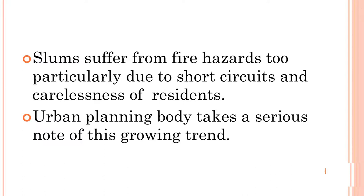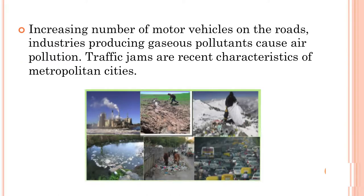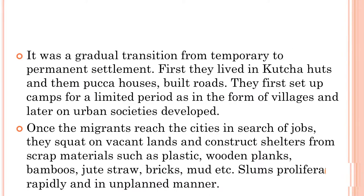Urban planning bodies take serious note of this growing trend. Increasing numbers of motor vehicles on roads and industries producing gaseous pollutants cause air pollution. Traffic jams are a recent characteristic of metropolitan cities. It was a gradual transition from temporary to permanent settlement — first they lived in kacha huts and then pakka houses; they first set up camps for a limited period in the form of villages, and later urban societies developed.